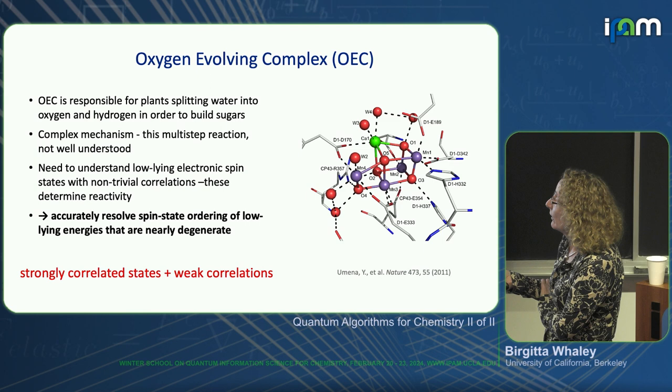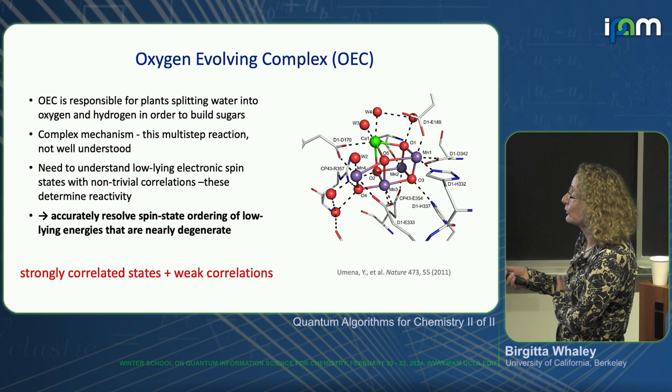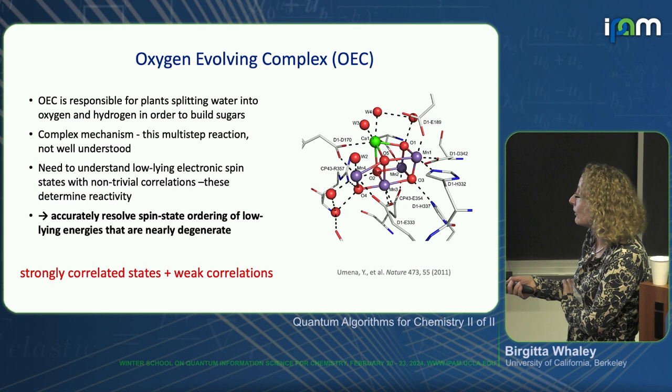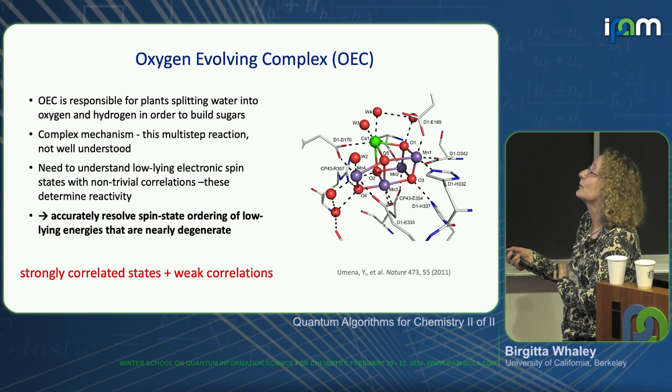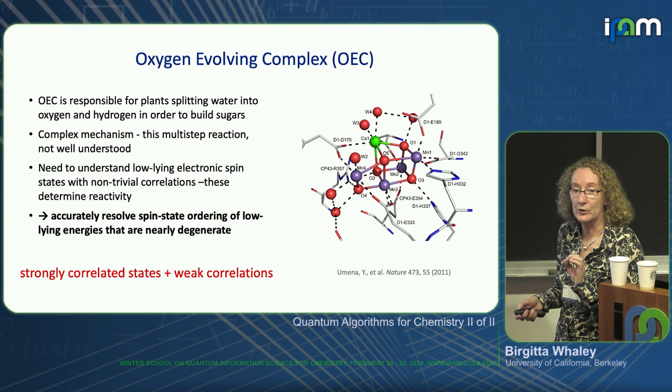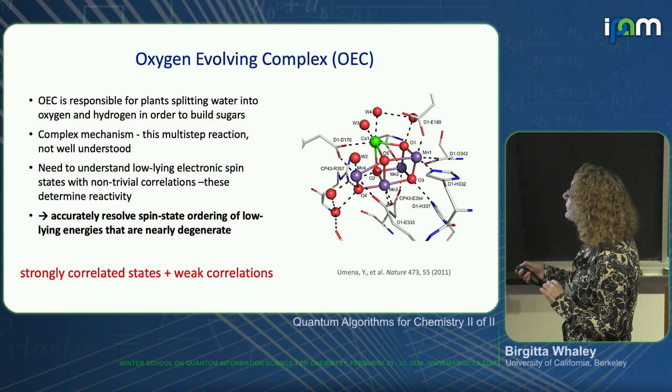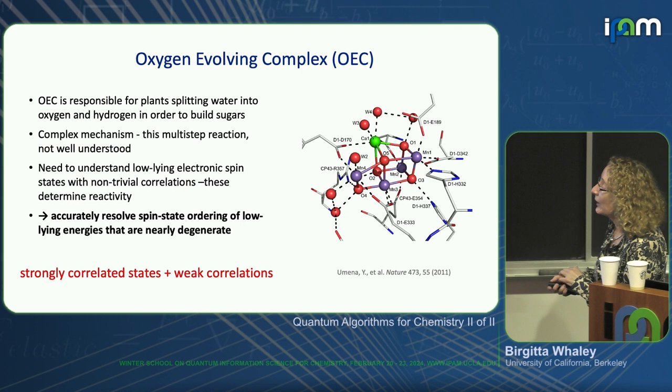Those low-lying electronic spin states determine the reactivity of the system, which is really important for life. This system has strongly correlated states because each transition metal atom can provide a radical — an unpaired electron. So you've got multiple radicals, plus the oxygens, the calcium atom, and surrounding water molecules contributing to weak correlations as well.